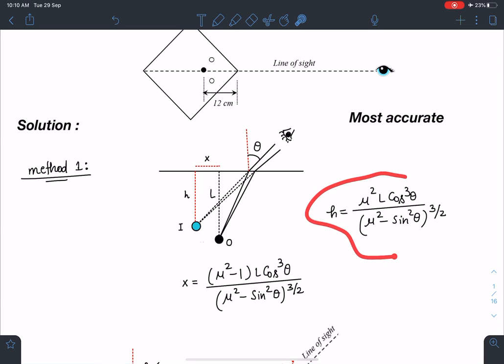And we are going to get this h as μ² l cos³θ divided by (μ² - sin²θ)^(3/2). So it's a problem I have taken that as a reference.